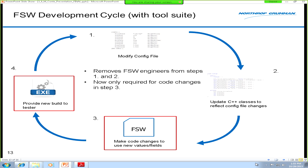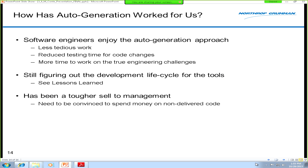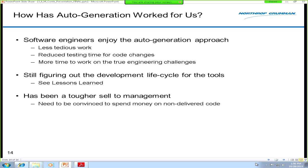With these tools, we look at the development life cycle again and see that flight software engineers have been taken out of two of the four steps. We now only have to make changes where a human programmer is really needed — such as adding new configuration or telemetry parameters that change how the system operates. We are seeing a lot of the benefits: reduced testing time and less of our time being pulled over to help out the systems engineers. Some problems — which I'll cover in the lessons learned — involve figuring out the development life cycle a little better.